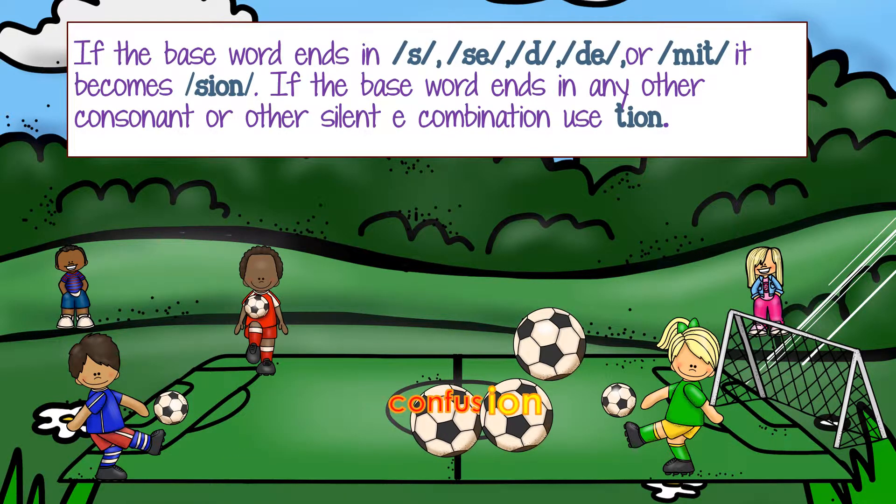Here we have the base word 'confuse.' Confuse ends in a single silent E. When we add the suffix I-O-N, confuse becomes confusion.